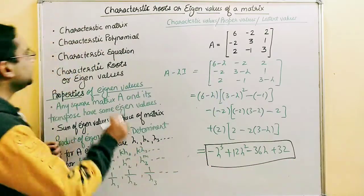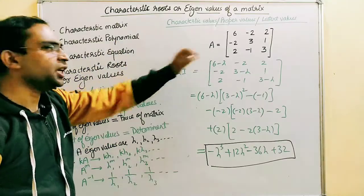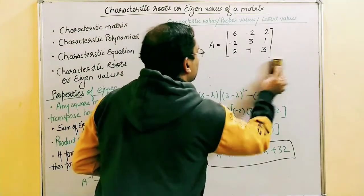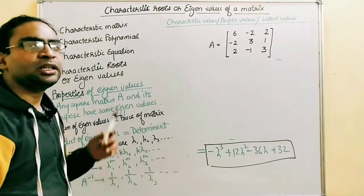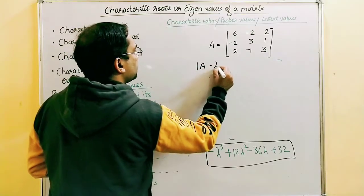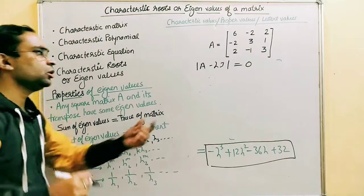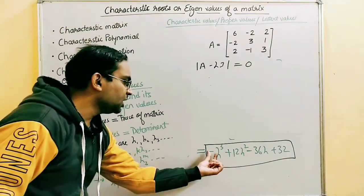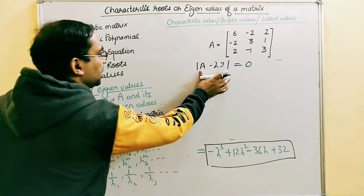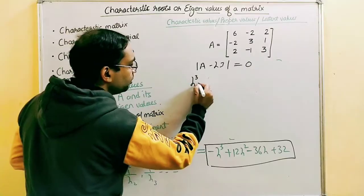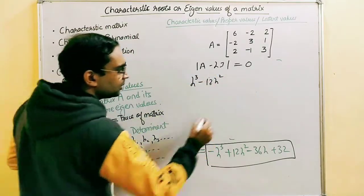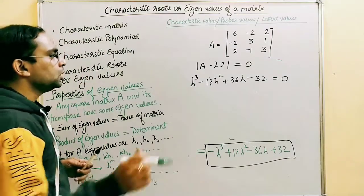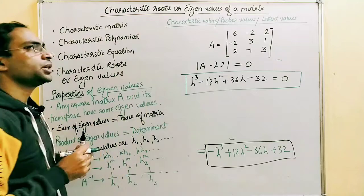This is a polynomial in lambda, so it is the characteristic polynomial of the given matrix A. The characteristic equation is obtained by setting the determinant of (A minus lambda I) equal to zero. Taking out the minus sign, the characteristic equation becomes: lambda cubed minus 12 lambda squared plus 36 lambda minus 32 equals zero.